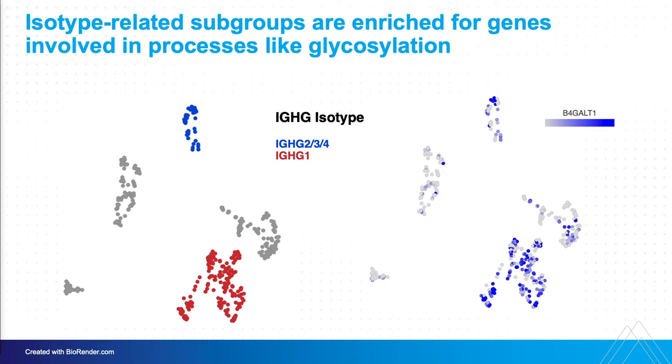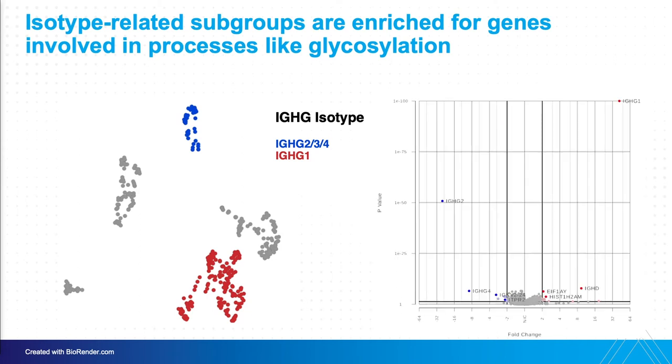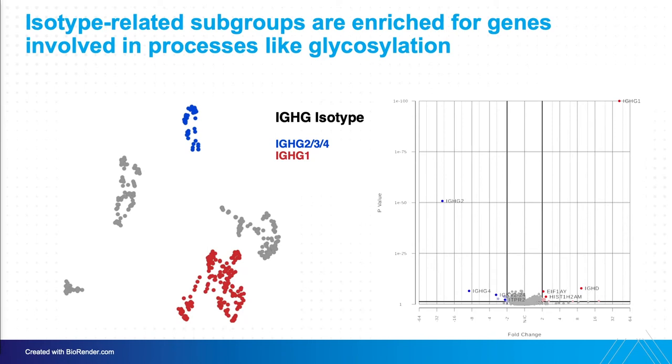We didn't necessarily expect to see different glycosylation factors being prominent for different isotypes, and that's really exciting data we couldn't have seen before — made special by the ONT setup for this pipeline. We see significant enrichment of B4-GALT1 in the IGHG1 subtype, and where we have IGHG2, 3, and 4, we see a little bit of enrichment but not so much. Being able to successfully parse out what's IGHG1 is really important. We can also do differential expression analysis — comparing IGHG subsets, we see things like ITPR2, a gene involved in B-cell longevity, which might be correlated with subtype.